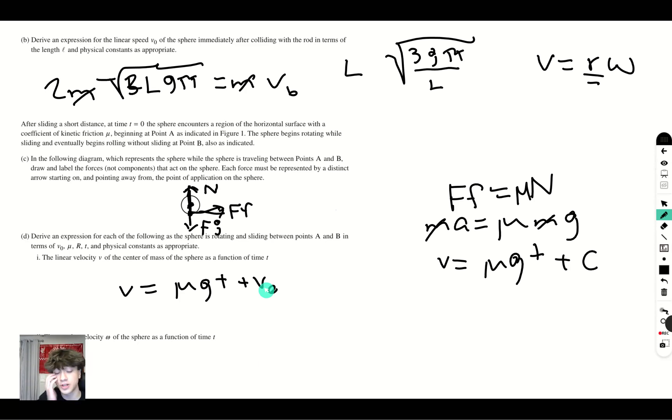But then when you think about it, the friction is going to be slowing down the object. So we're going to make this negative because it starts at a constant positive value and then it keeps decreasing until the velocity reaches 0 due to friction.